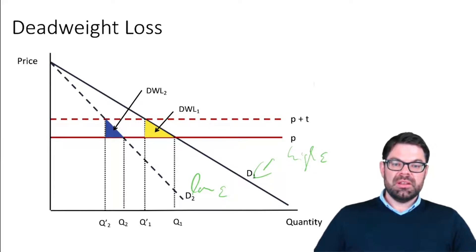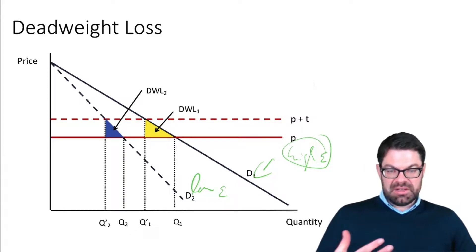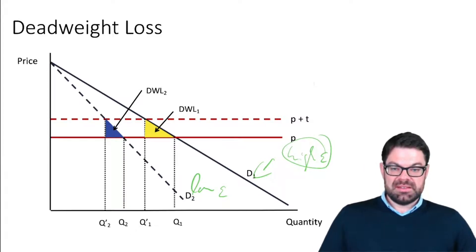In the second case with the low demand elasticity, the deadweight loss is actually smaller than for the good that has a high elasticity. Why is that? Is there an intuition behind it? Yes there is.